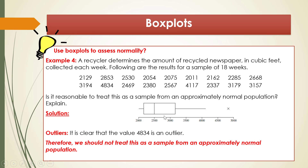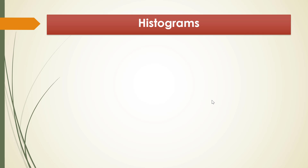Therefore, we should not treat this as a sample from an approximately normal population. Usually we only need one sign of non-normality to say that we cannot treat the sample as being from an approximately normal population. Here we have two signs: skewness and an outlier. That is how we use box plots to assess normality.